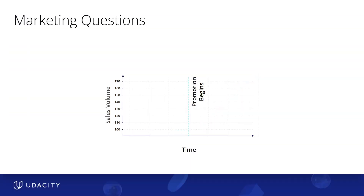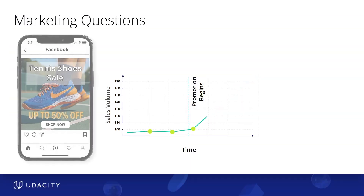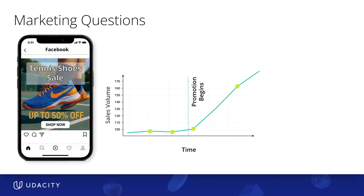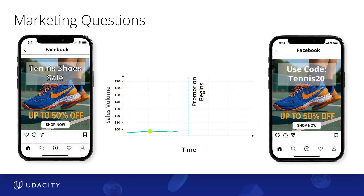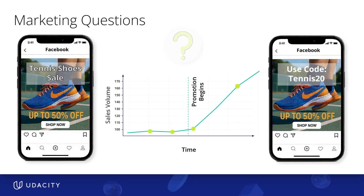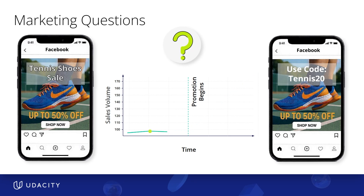Take marketing. If a campaign drives more sales, you might increase the budget. If it doesn't, you'll want to reallocate those dollars elsewhere. But consider affiliate codes or promo codes found online — did these discounts drive incremental purchases, or were they used by customers already planning on buying?